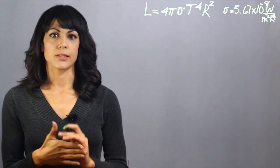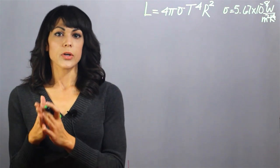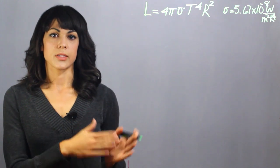And then the second thing that we can tell is the temperature of the star by just looking at the star. So the color of the star is directly correlated to the temperature of the star.